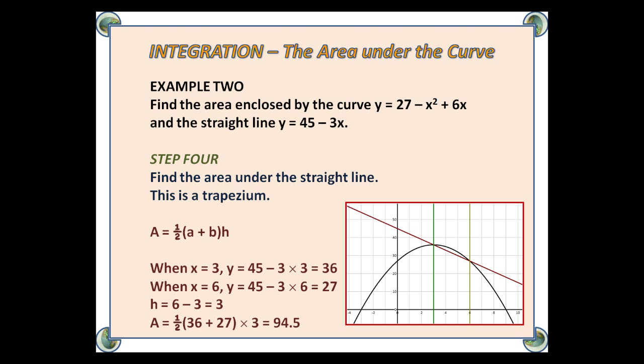The formula for a trapezium is ½(a + b)h. When x = 3, y = 36, and when x = 6, y = 27. So they're the parallel sides. The height is 6 - 3, which is 3. So the area of the trapezium is 94.5.